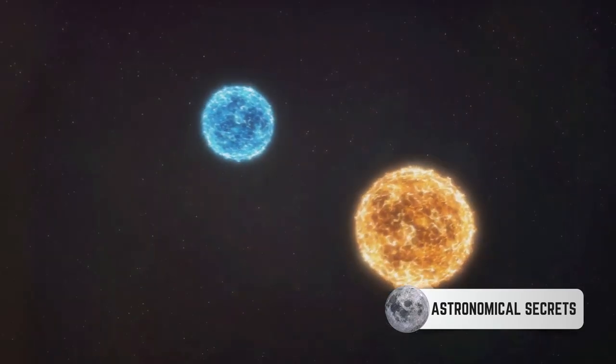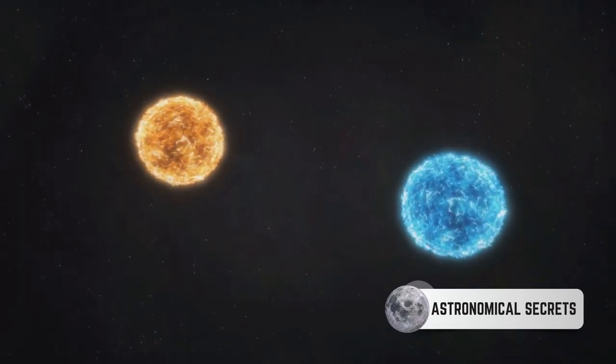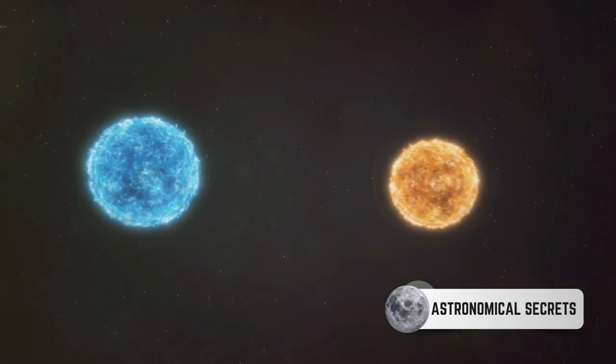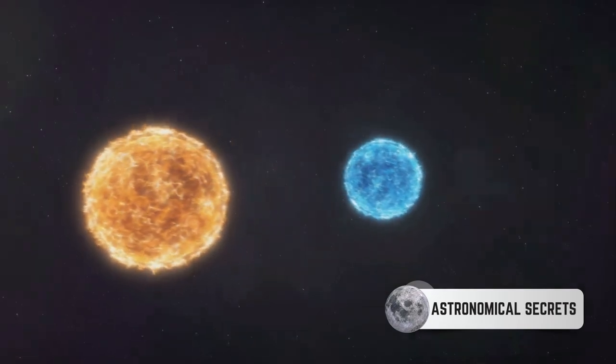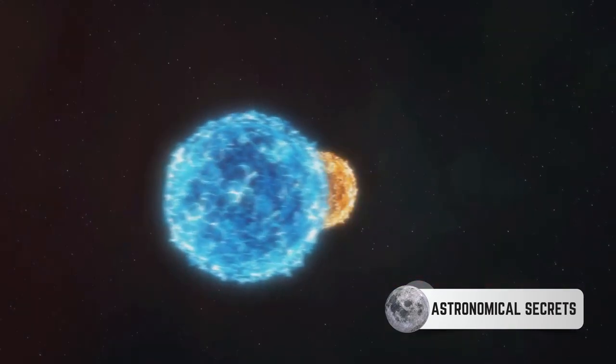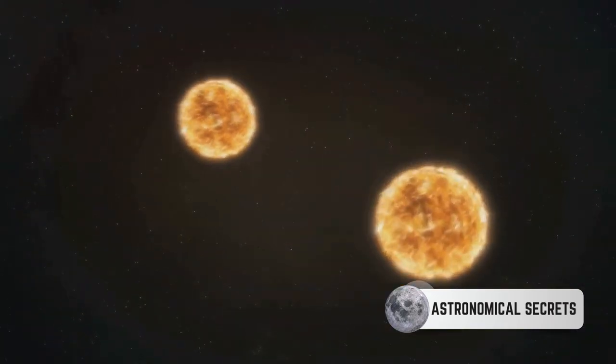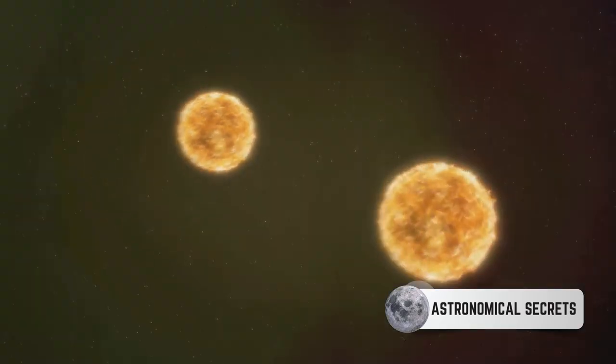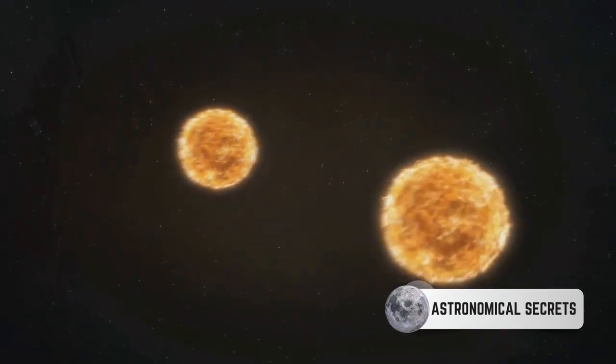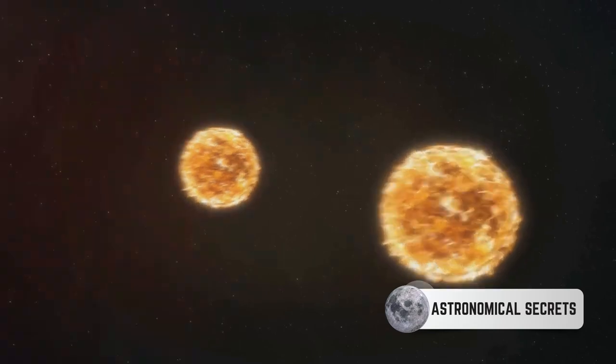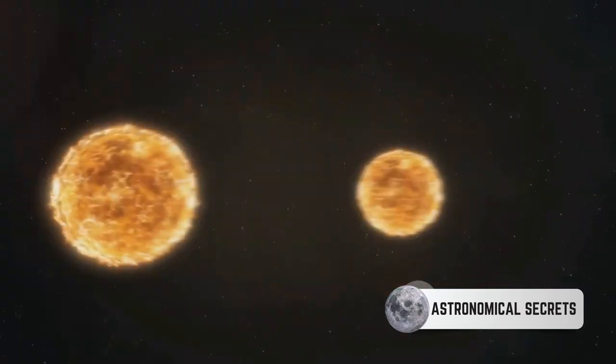They're a fascinating class of stars that exist in binary star systems. Binary star systems are just a fancy term for two stars that orbit a common center of mass. In this cosmic duet, one star is a white dwarf, a small dense star that has exhausted its nuclear fuel. The other star is usually a red dwarf, a smaller, cooler star that's still in its main life phase.